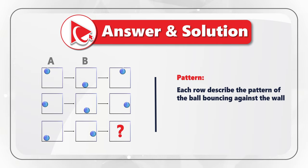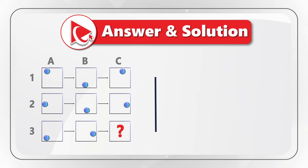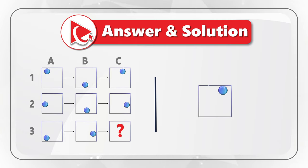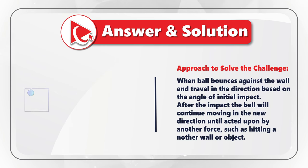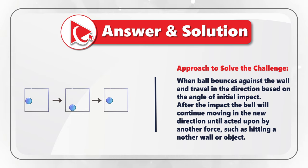To better solve this challenge, let's assign columns and rows to each object in the picture. We will have columns A, B, and C, and rows 1, 2, and 3. Each row describes the pattern of a ball bouncing against the wall. Looking at object A1, the ball is in the upper left corner and it moves downwards toward the middle of the bottom section. That is exactly where we see the ball in object B1. After that, the ball bounces and moves upward, as we see in C1.